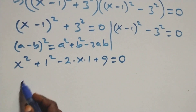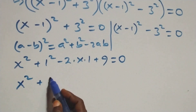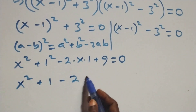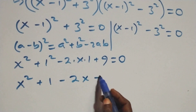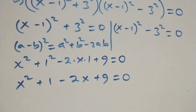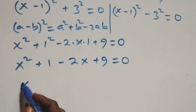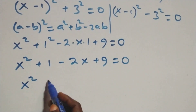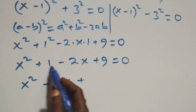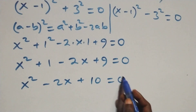This can be written as x² plus 1 minus 2x plus 9 equals 0, which simplifies to x² minus 2x plus 1 plus 9, giving x² minus 2x plus 10 equals 0. This is a quadratic equation.